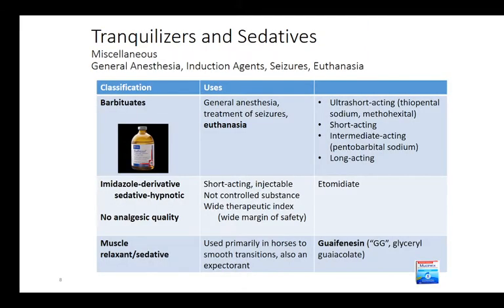Barbiturates are another class you might see used for general anesthesia, treatment of seizures (such as phenobarbital), and euthanasia. There are ultra-short-acting, short-acting, intermediate-acting, and long-acting barbiturates. They have been used for anesthesia for nearly a hundred years. The euthanasia solution we use is pentobarbital sodium, which is essentially an overdose of anesthesia.